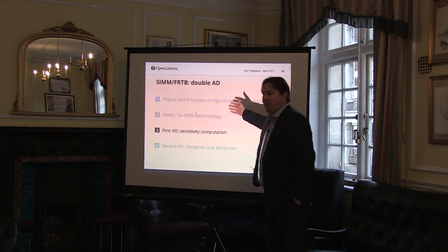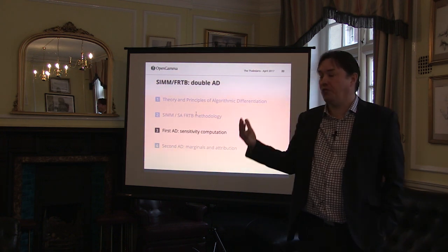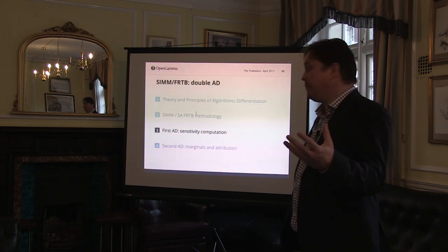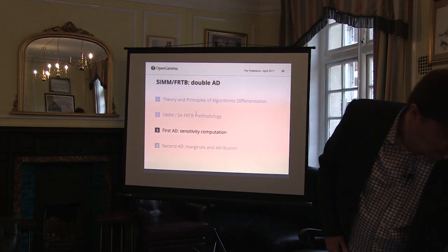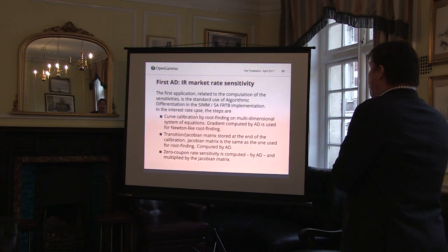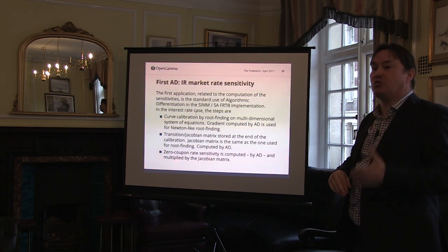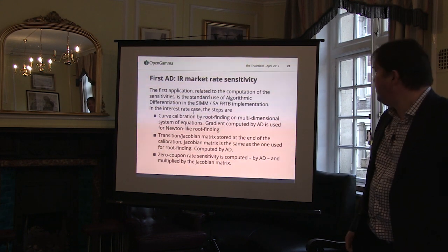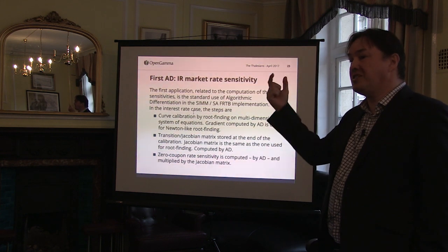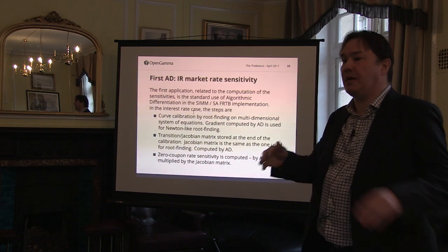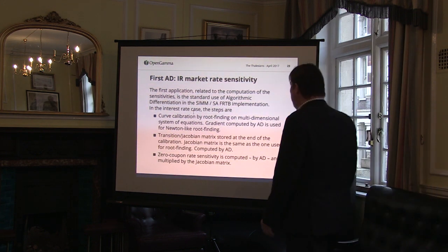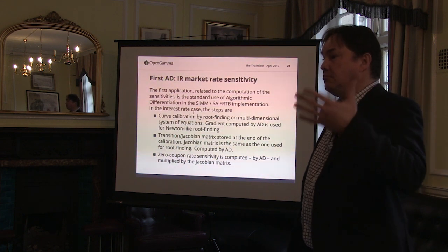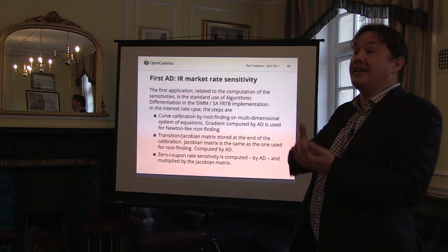The inputs of FRTB or SIM are the sensitivities, so there I will use AD a first time. My example will be in the interest rate market, where I have to compute the sensitivities of the present value with respect to all the inputs. Very quickly: I have inputs from the market — the interest rates — and my first step is to calibrate the curves, the zero curves, going from the raw data to the calibrated data.